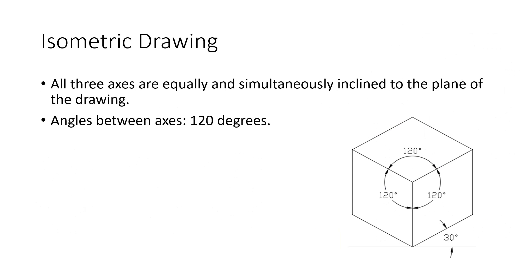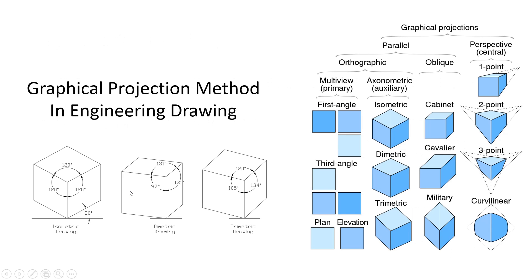Isometric, dimetric, and trimetric drawings are types of pictorial projections used in technical and engineering drawings to represent three-dimensional objects on a two-dimensional surface.